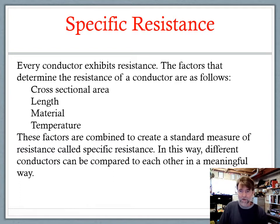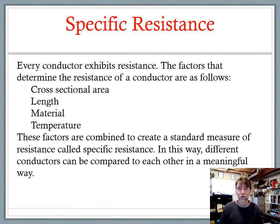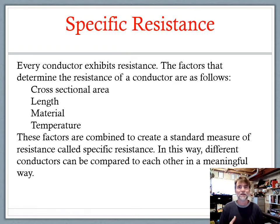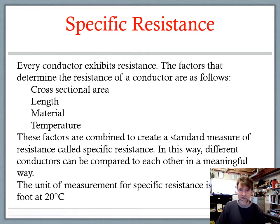These factors are combined to create a standard measurement of resistance which we call specific resistance. In this way, different conductors can be compared to each other in a meaningful way. We talk about copper compared to aluminum — those are our two primary conductors. We've talked about the fact that copper is a better conductor than aluminum, meaning copper offers less resistance and aluminum offers more resistance. But we need to be able to quantify that — that's where specific resistance comes in.